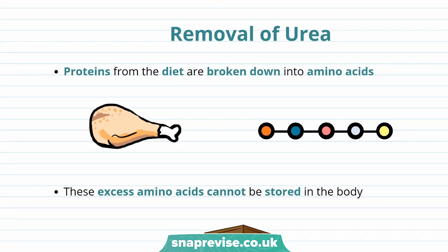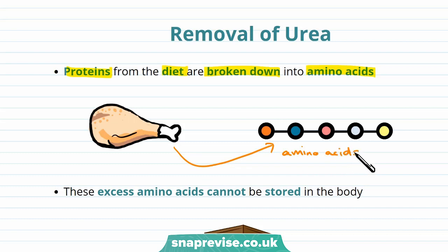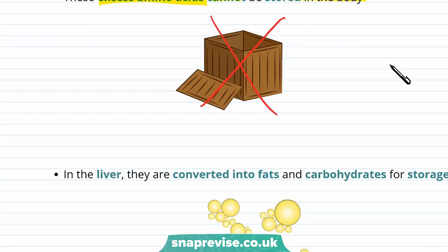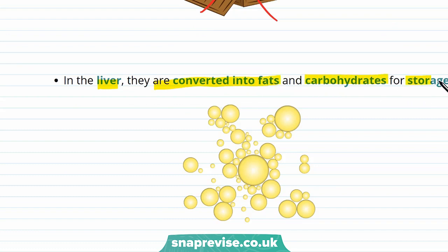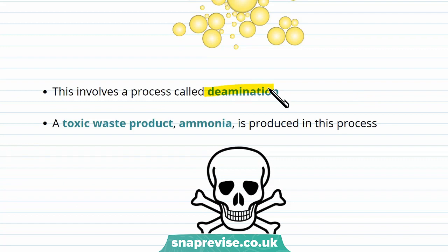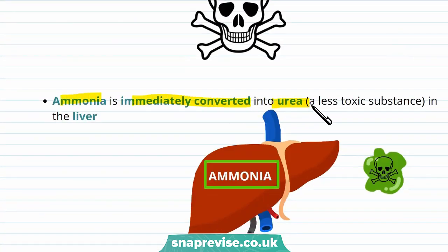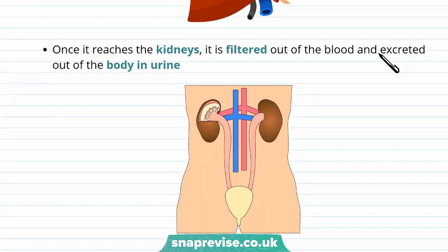Now let's talk about the removal of urea. Proteins from the diet are broken down into amino acids, which can be used to build muscle and cell tissue and are used in important bodily functions such as giving cells their structure. However, excess amino acids can't be stored in the body, so in the liver they're converted into fat and carbohydrates for storage. This involves a process called deamination. A toxic waste product, ammonia, is produced in this process. Ammonia is then immediately converted into urea, which is a less toxic substance, and this happens in the liver. This urea is then transported to the kidneys, where it's filtered out of the blood and excreted out of the body in urine.